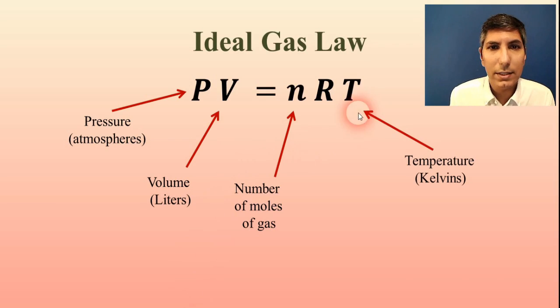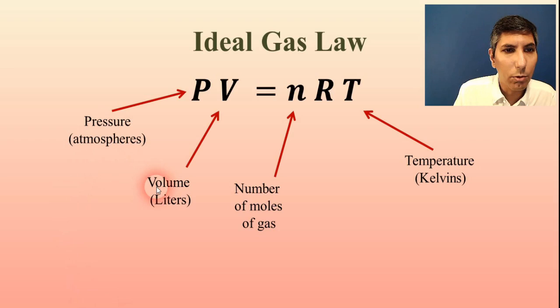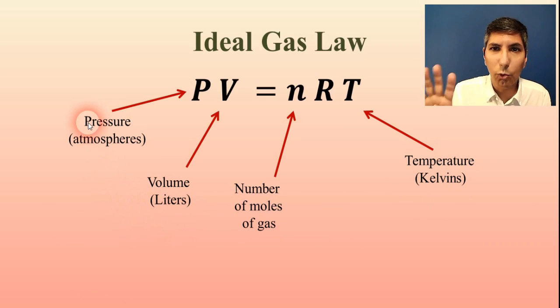Now T stands for the temperature of the gas. And that needs to be in kelvins. And just like it was in the gas laws in the previous video, if for some reason the temperature is not given in kelvins, if it's in Celsius, you have to convert it to kelvins in order to make this work. Now if you look at these four variables here, you'll notice that these correspond perfectly to the four properties of gases that we talked about a couple of videos ago.